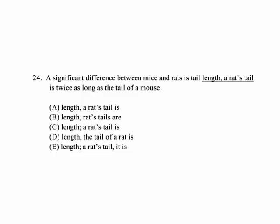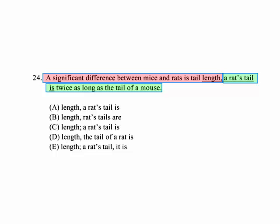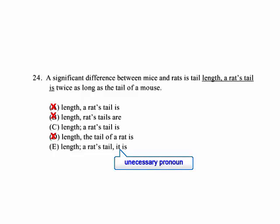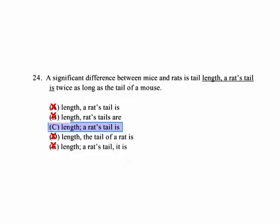Number 24. 'A significant difference between mice and rats is tail length. A rat's tail is twice as long as the tail of a mouse.' We have two independent clauses — each stands alone as a complete sentence. Since they're not joined by a conjunction, we join them with a semicolon. The only answer choices with a semicolon are C and E. E contains 'it is,' which is an unnecessary pronoun that confuses the sentence. So our correct choice is C.